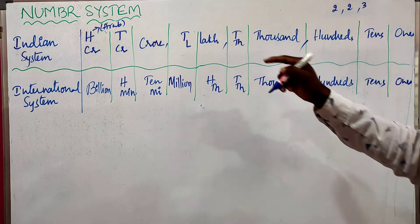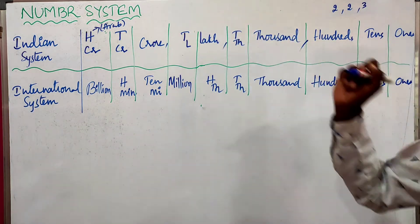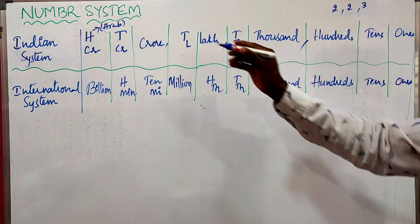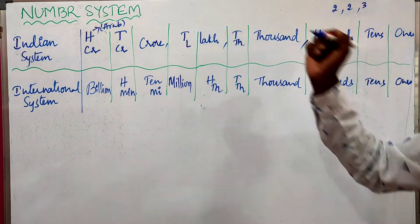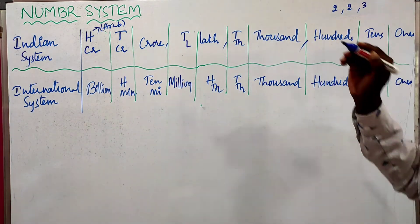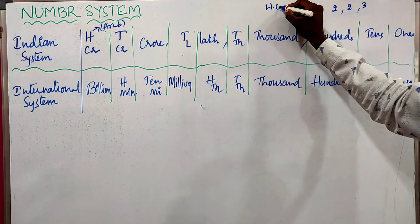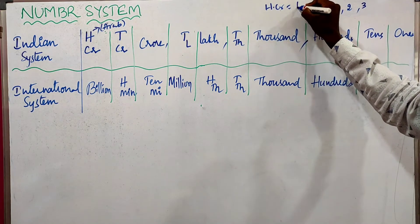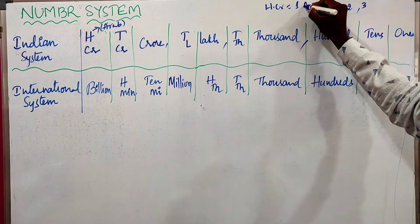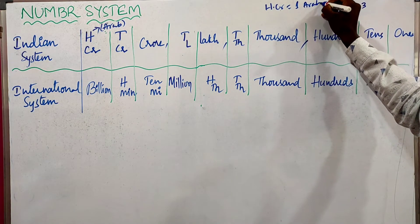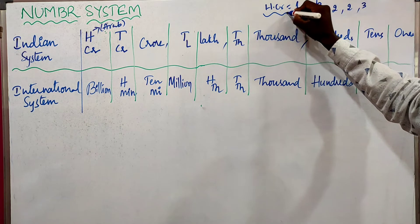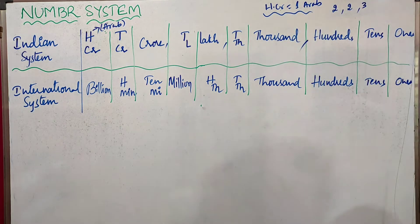In the Indian system, 100 crores can be read as 1 Arab. So 100 crores is equal to 1 Arab — we can read it as either 100 crores or 1 Arab.